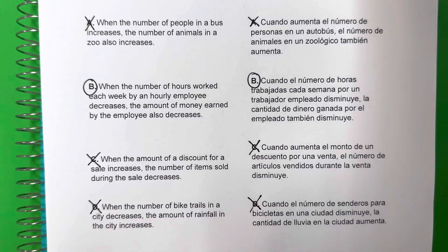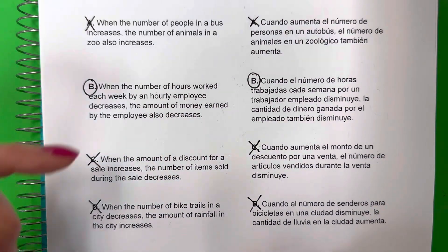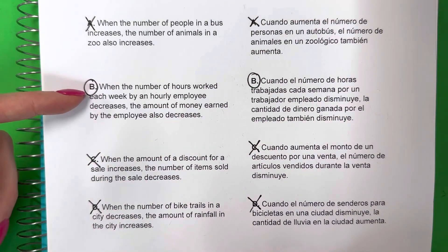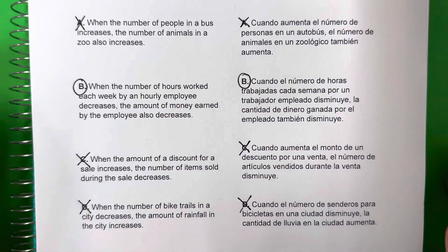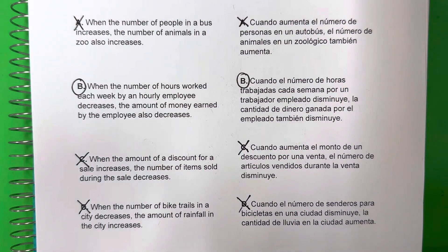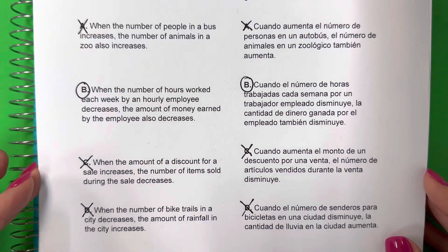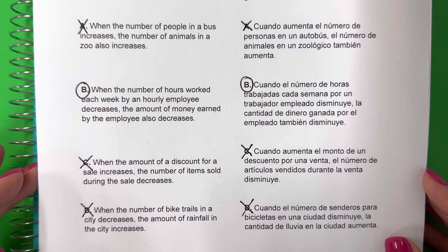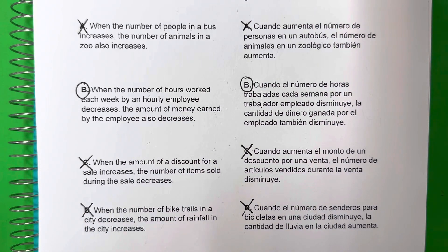So the only one that makes sense is B. La única que puede pasar es la B. When someone works less hours, they make less money. Cuando alguien trabaja menos horas, van a tener menor dinero. Thanks for watching. Please make sure to comment with your own example of causation. Muchas gracias por ver mi video. Y por favor, no olvides comentar tu ejemplo de causalidad. If you like the video, please give it a like, subscribe, and don't forget to leave that comment. Thanks for watching.